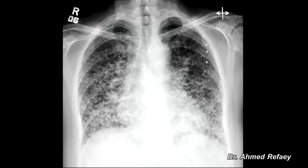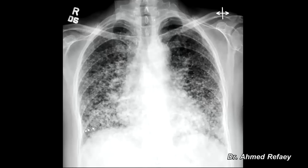A chest x-ray was done and revealed innumerable micro nodules distributed diffusely in both lungs, involving all the segments of both lungs as you see here. No significant pleural effusion could be appreciated.